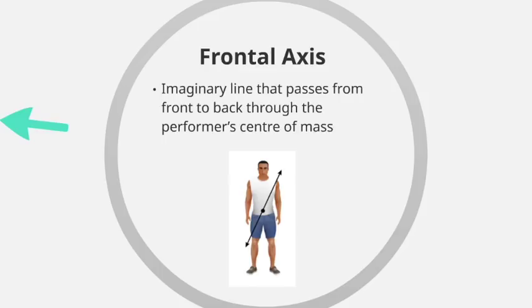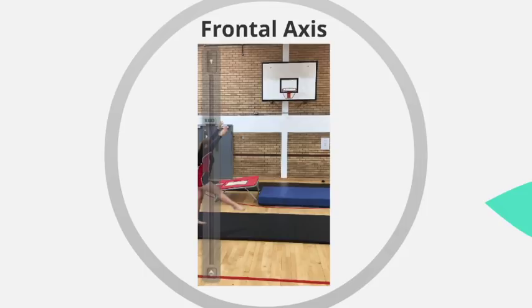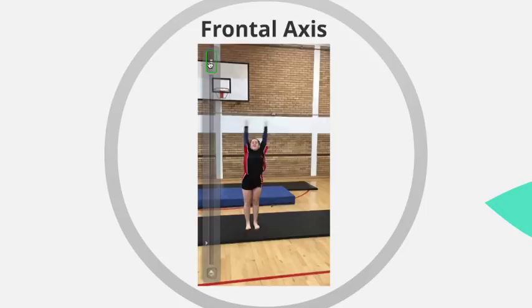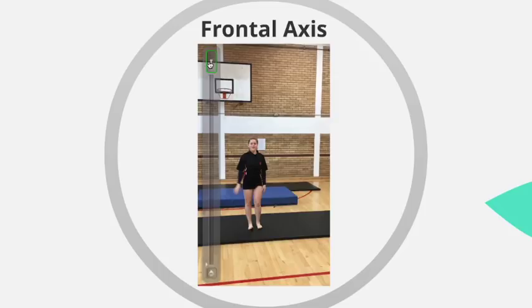The frontal axis is an imaginary line that passes from front to back through the performer's centre of mass. Looking at the diagram, the black dot represents the performer's centre of mass, typically around where your belly button is. This axis runs from the front of the performer, straight through their centre of mass, and out through the back. A great example of rotation about the frontal axis is the cartwheel.